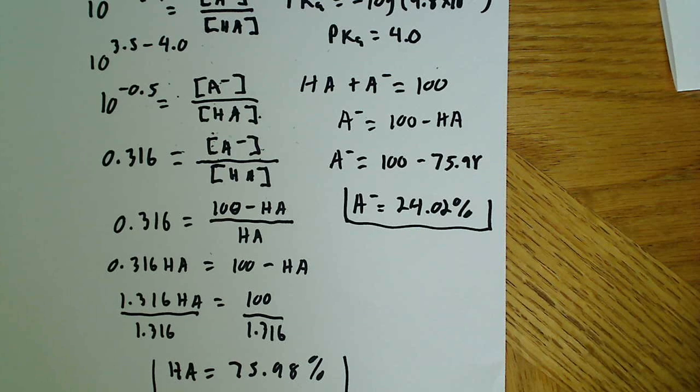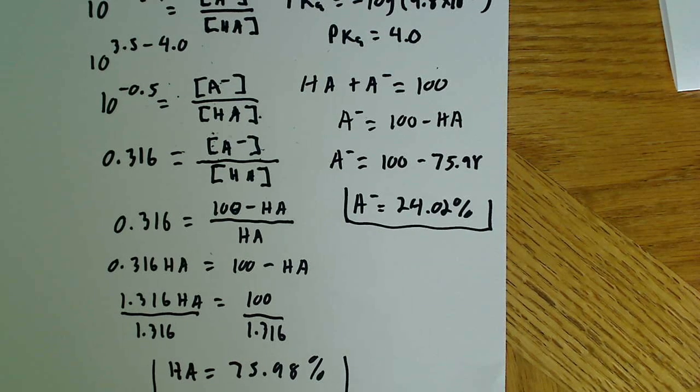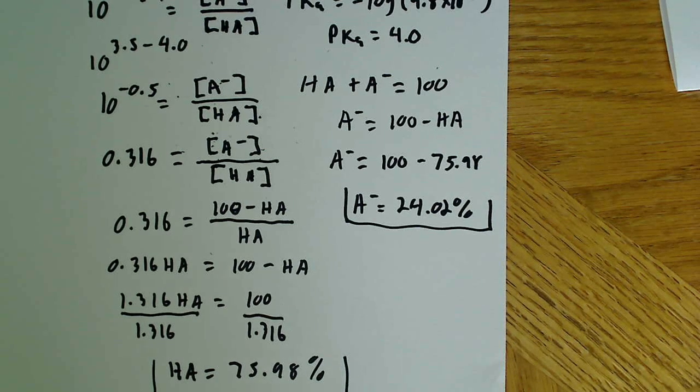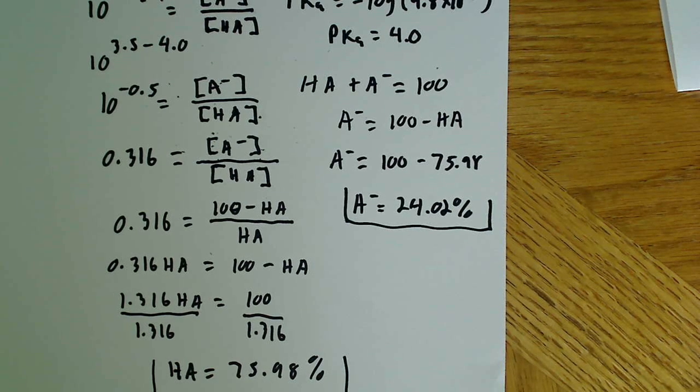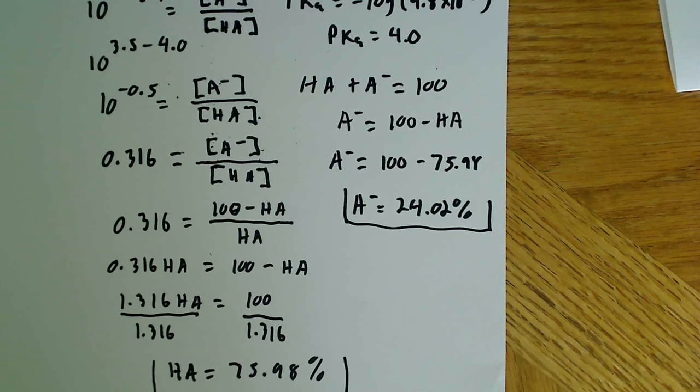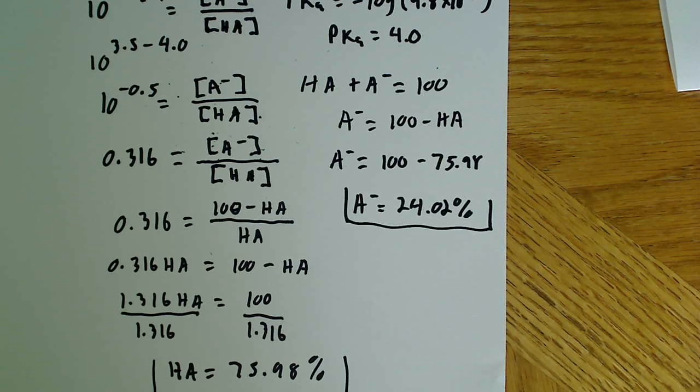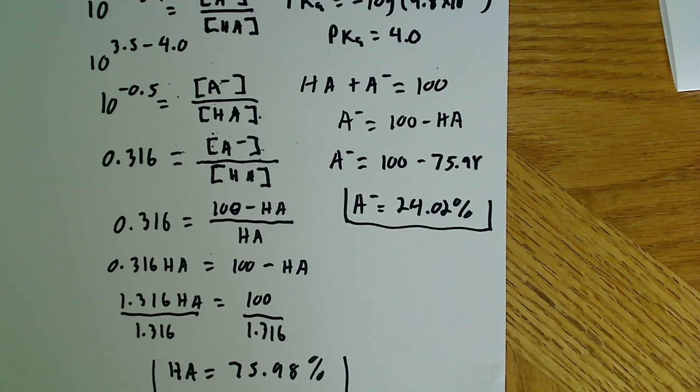Now, just to check this, to say, well, does this make sense or does it not make sense? All you have to do is say, okay, it's at pH 3.5, which is lower than the pKa. So, that means that you're most likely going to have, in this case, more protonated than deprotonated, because it's more acidic.